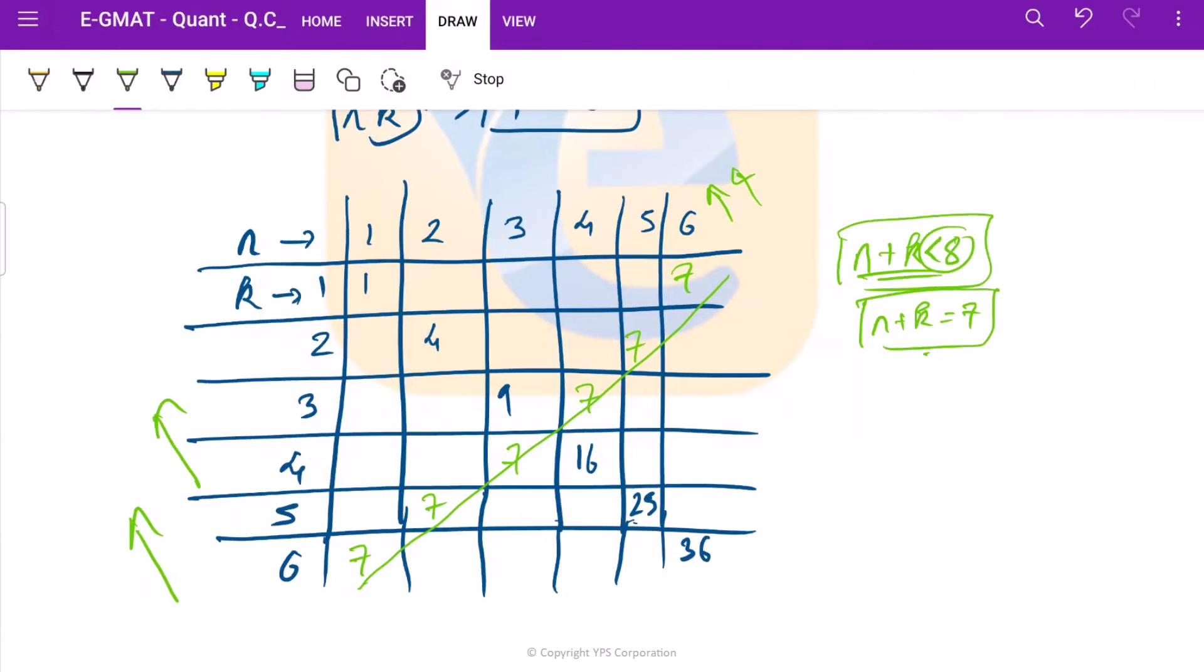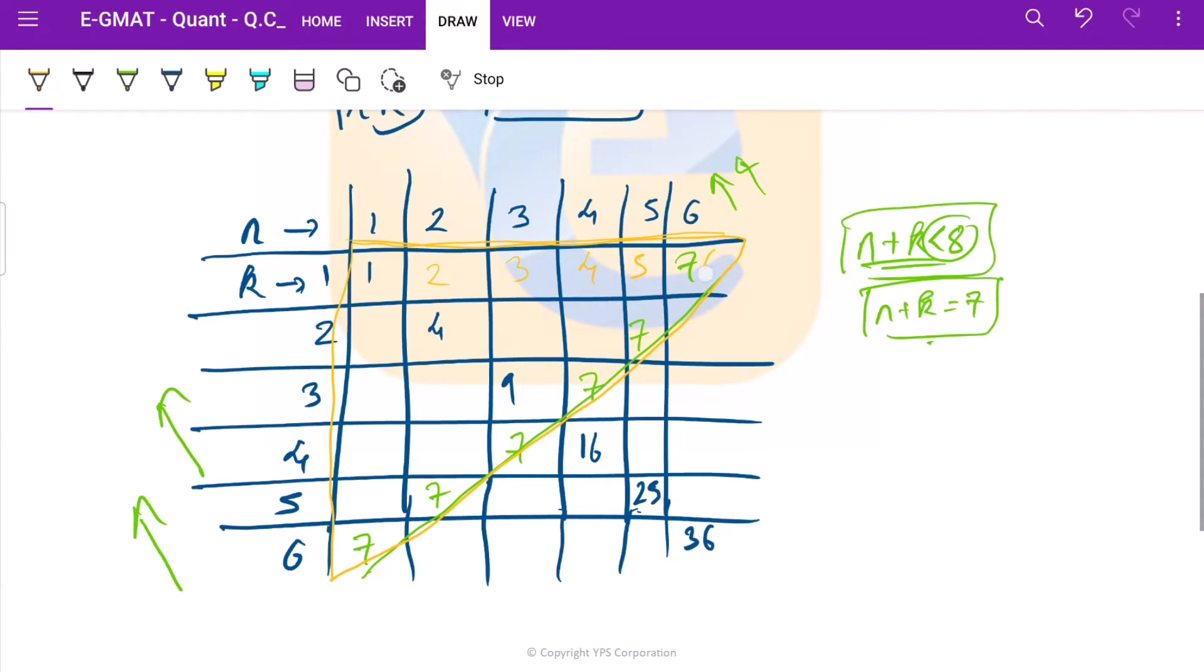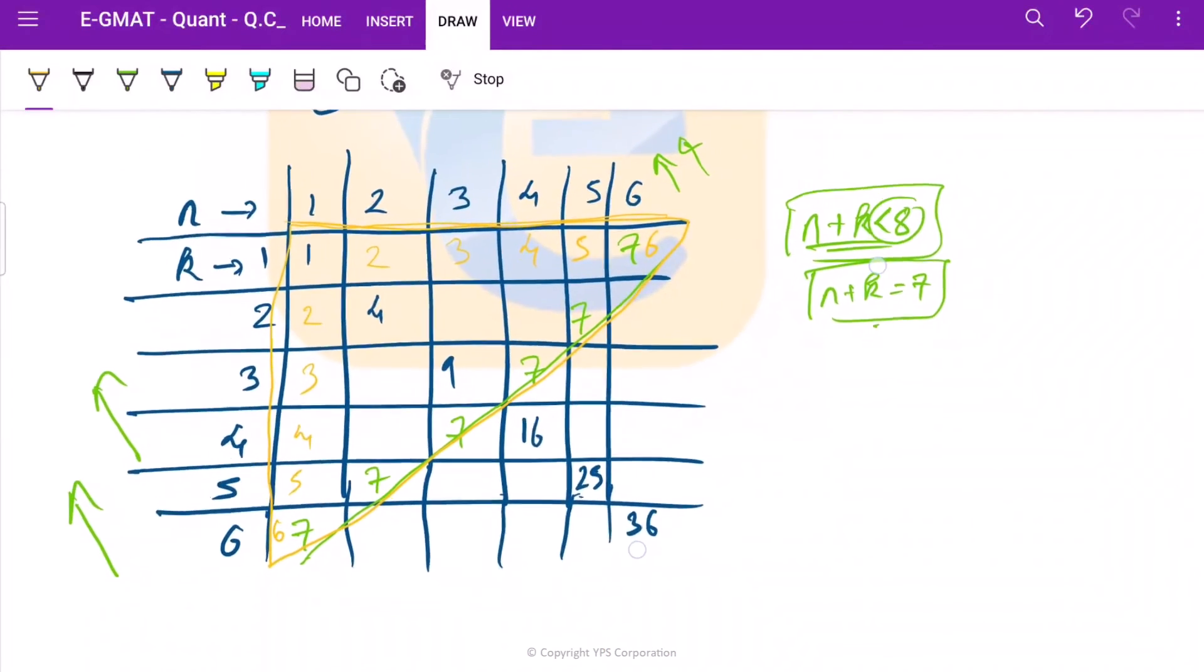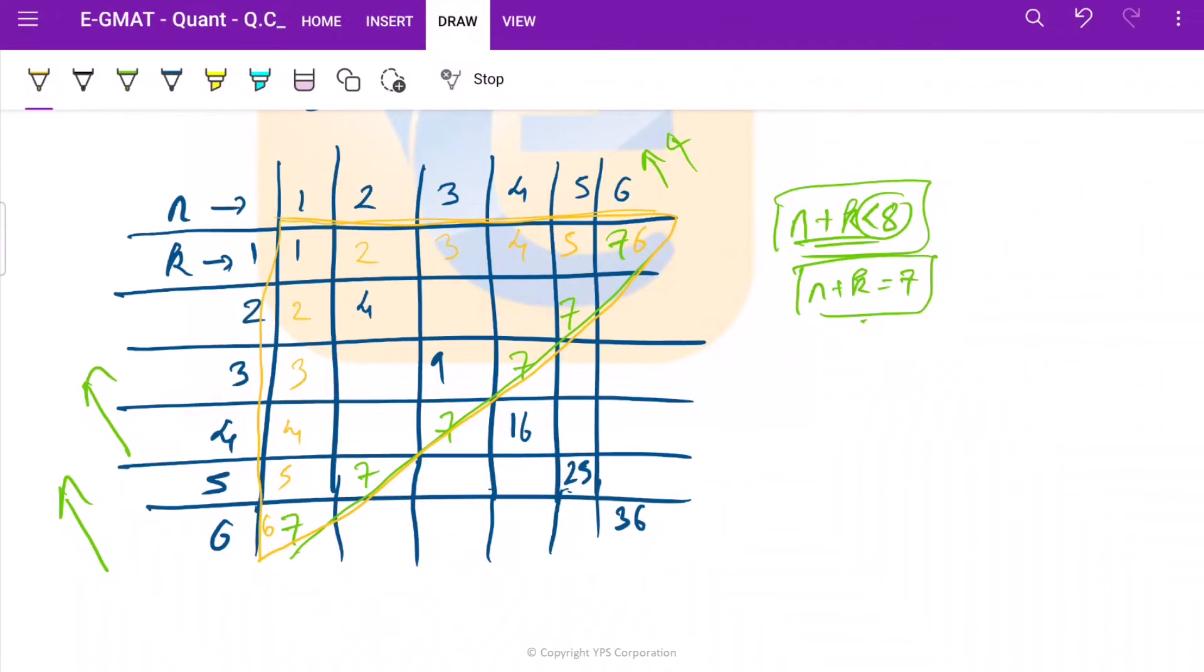So what are the different products that we are getting? That is the question ultimately. So in this region, what are our different products of values that we get? It will be 1, 2, 3, 4, 5, and 6. So we get the first 6 values. Now here again, 1, 2, 3, 4, 5, and 6. These values we would be having either ways.